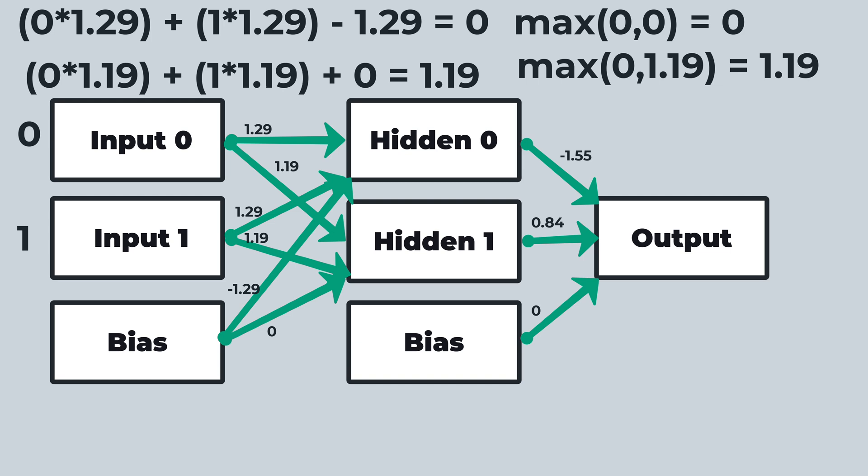Those two values that we calculated with the rectified linear unit, they are then passed on to the final output neuron along with the bias value. So we multiply the first hidden value times its weight, the second hidden value times its weight, and we add in the bias. Technically the bias times one, but it's just the bias, and that gives us the final output. There is no activation function here so that is truly just the final output.